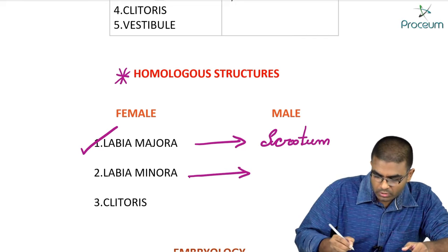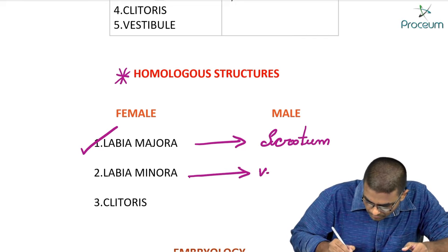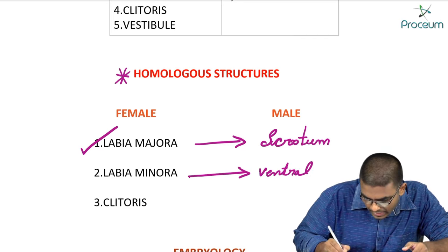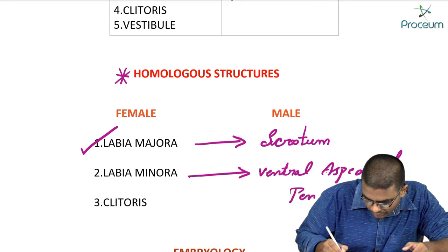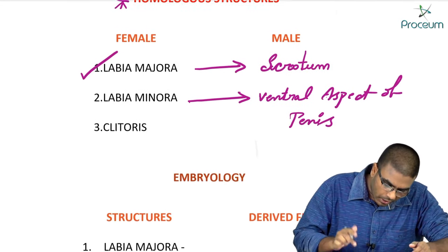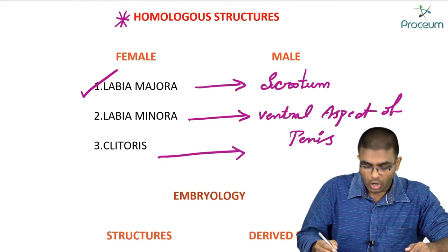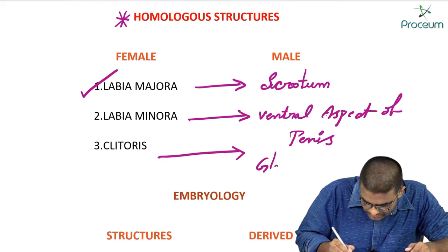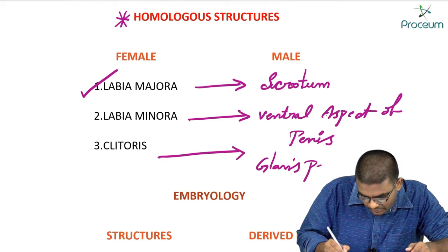Labia minora is homologous to the ventral aspect of the penis, or penile urethra. Clitoris is homologous to the glans of the penis. These are very important MCQ points for board exams.